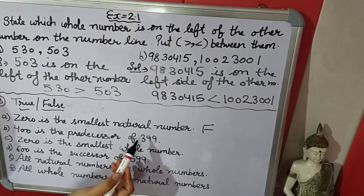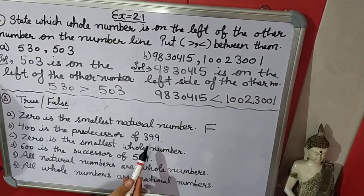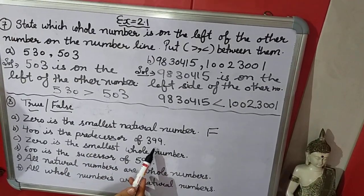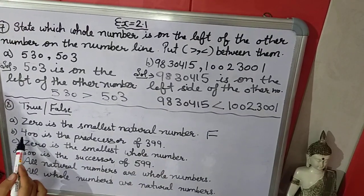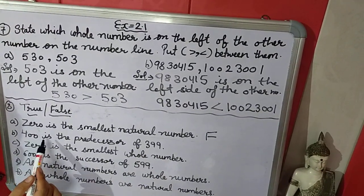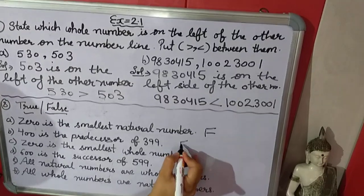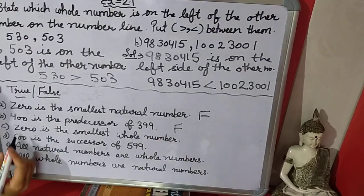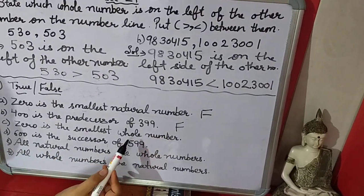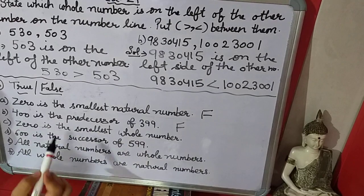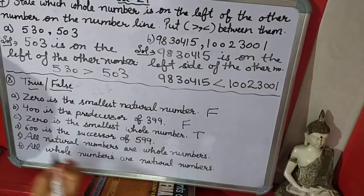Predecessor means minus 1. If we subtract 1 from 399, we get 398. So 400 is not the predecessor of 399 — that is wrong, it is false. Next: 0 is the smallest whole number. Yes, 0 is the smallest whole number. It is true.